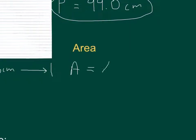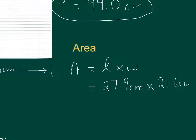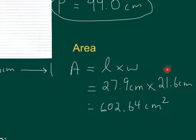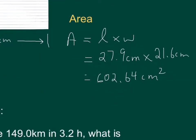To calculate area, we use length times width — this is a multiplication, unlike the addition above. So 27.9 cm times 21.6 cm gives us 602.64 centimeters squared. Now we check: how many significant digits does each number have? Both have three. When multiplying and dividing, the final answer can only go to the least number of sig digs, which is three. So we can't keep all five digits — we have to round.